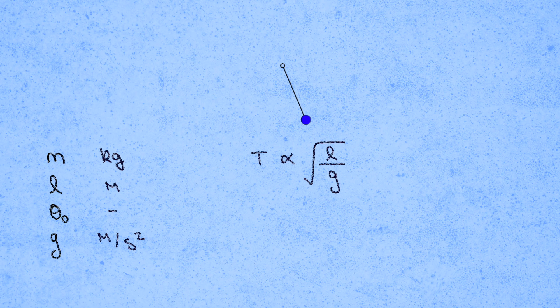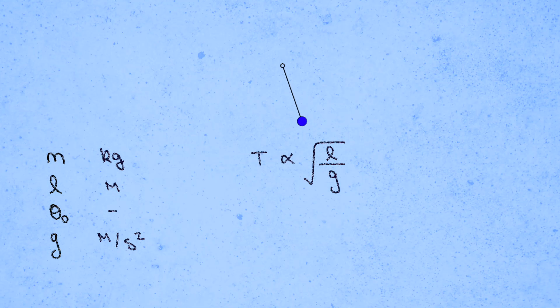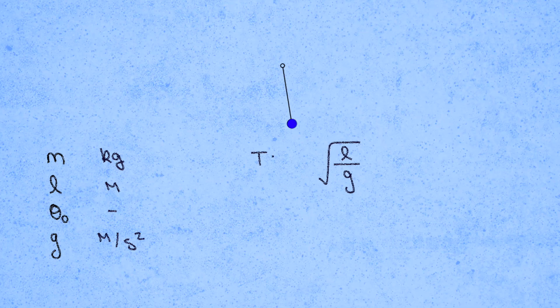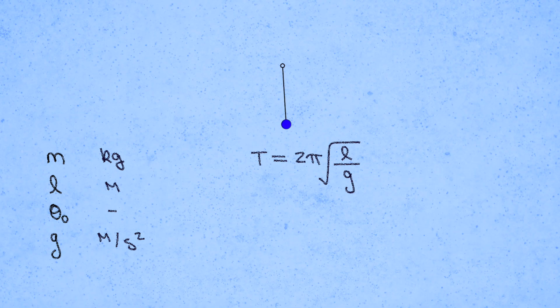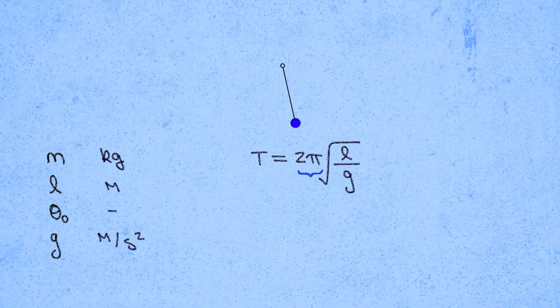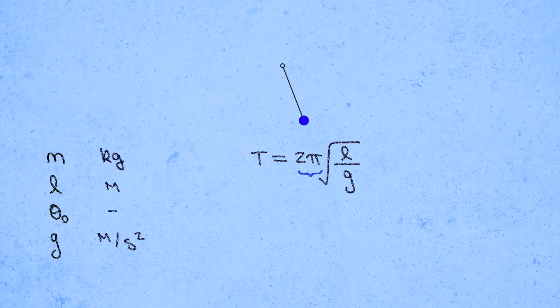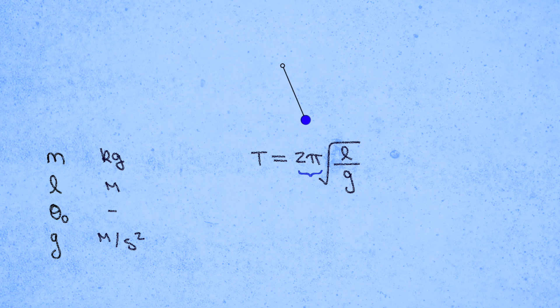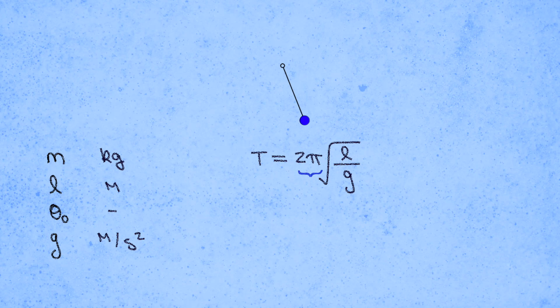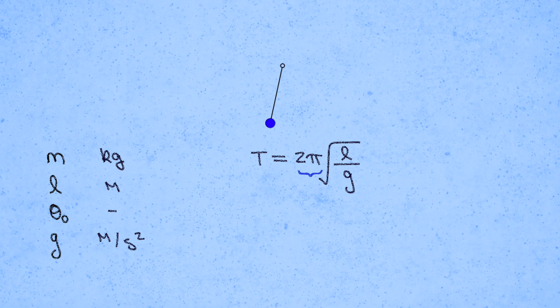With next to no work, dimensional analysis has gotten us the most important part of the answer. In your intro mechanics class, you might have computed that the period is more precisely given by 2 pi times the square root of L over G. Dimensional analysis can't tell us anything about that factor, though. 2 pi is just a pure number without any units. Thinking about the dimensions alone tells us that the answer has to be proportional to the square root of L over G, but it doesn't say anything about whether there's a 2 or a pi or the square root of 17 that multiplies it.